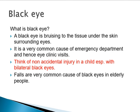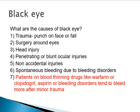Whenever you see black eyes, always think of possible life-threatening or vision-threatening injuries. Sometimes black eyes can be without any associated problems, but we need to rule out life-threatening as well as vision-threatening problems. Always in a child with bilateral black eyes, we need to keep in mind the possibility of non-accidental injuries — this may be the chance to save the child from further harm. Falls are a very common cause of black eyes in elderly patients.